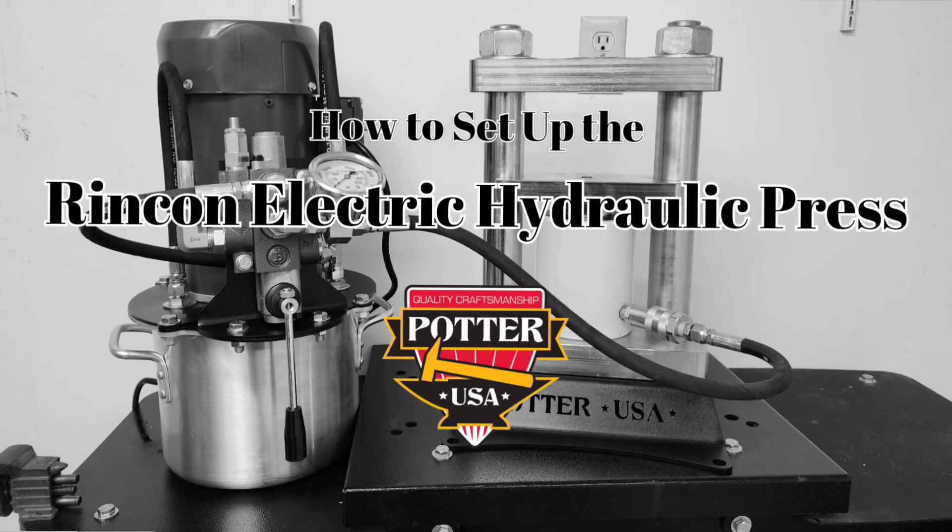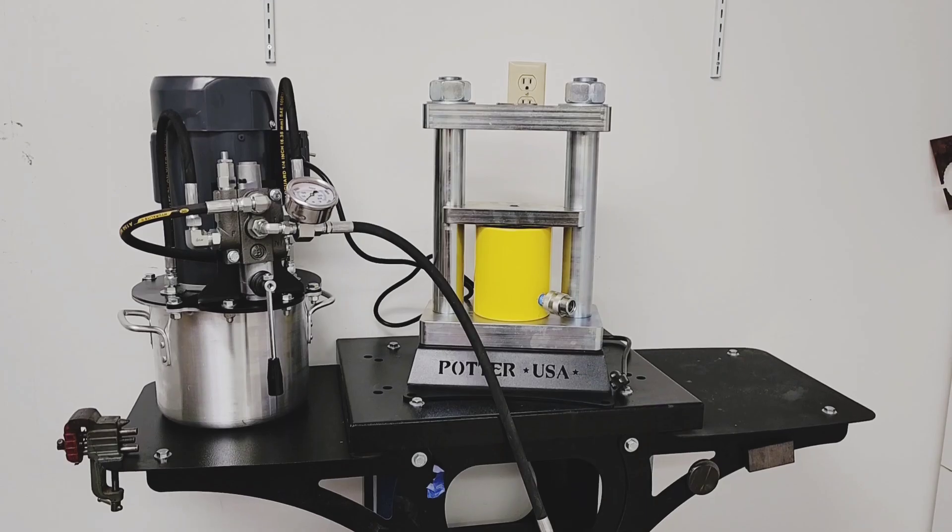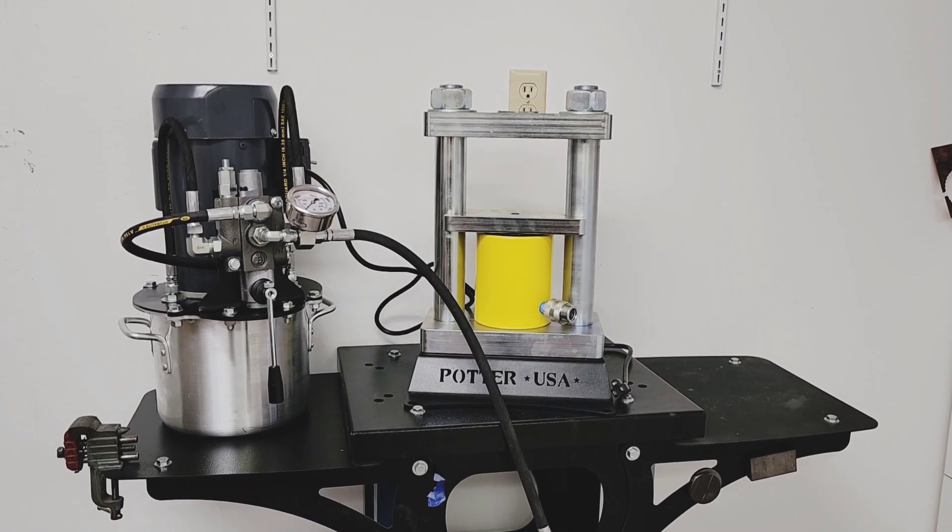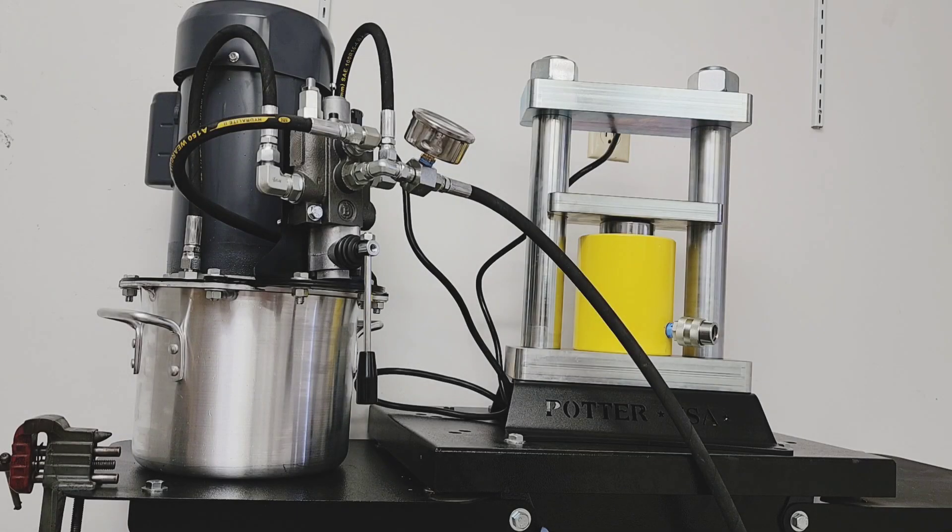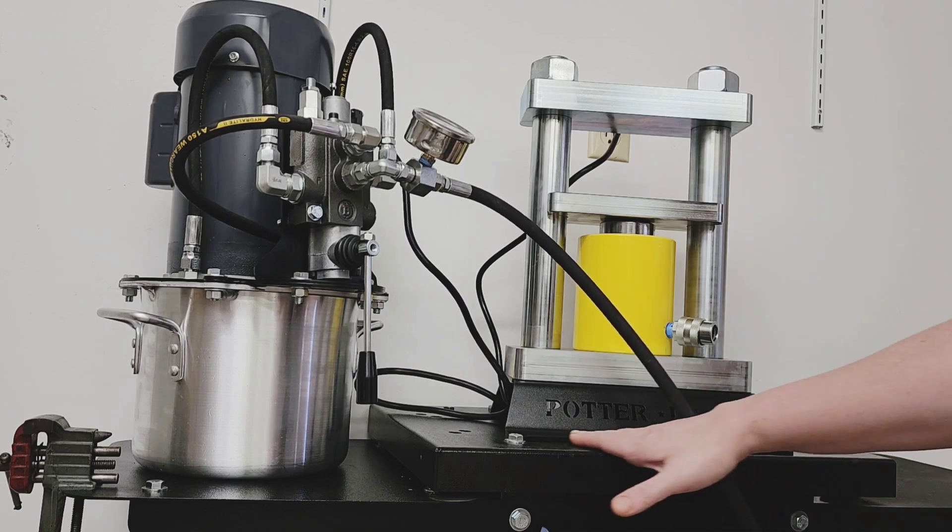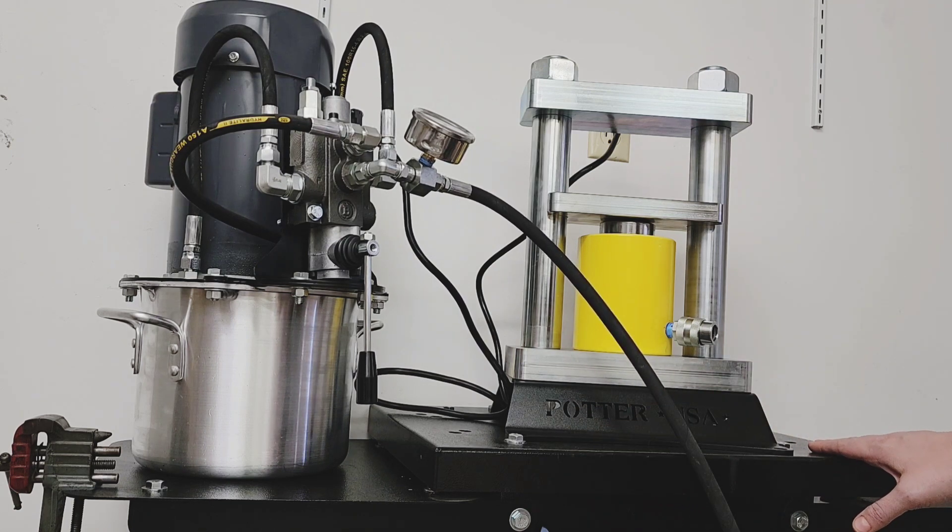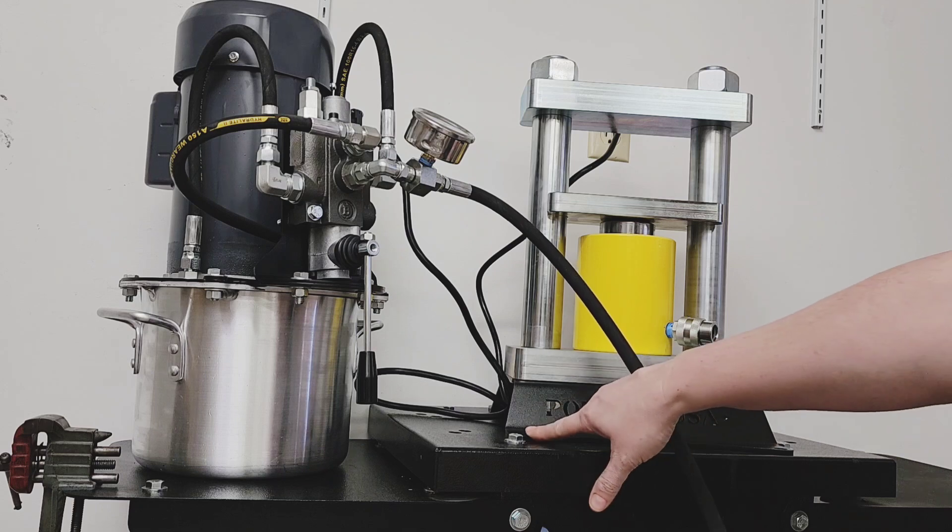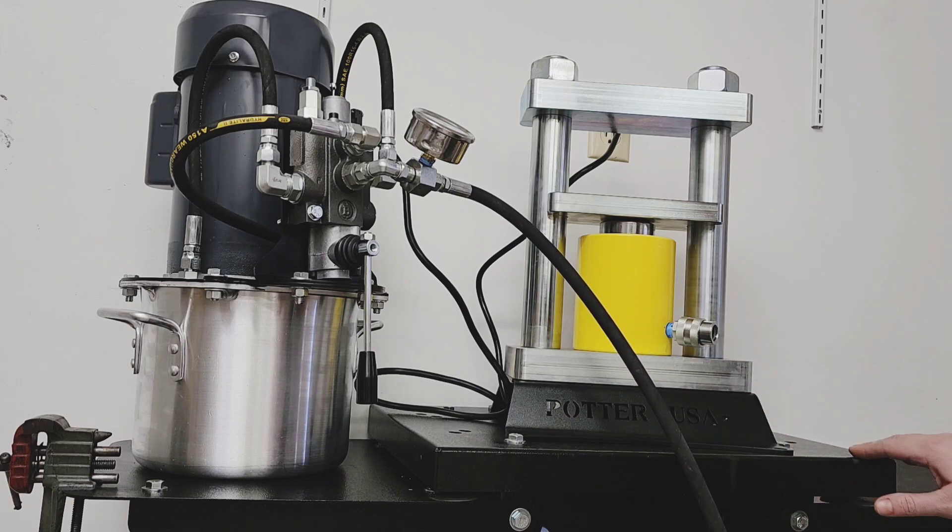In this video, we'll show you how to set up your electric Rincon hydraulic press from Potter USA. Place the press frame onto a sturdy work surface, and then place the electric pump on the same work surface on either side of the frame, whichever you're more comfortable with.